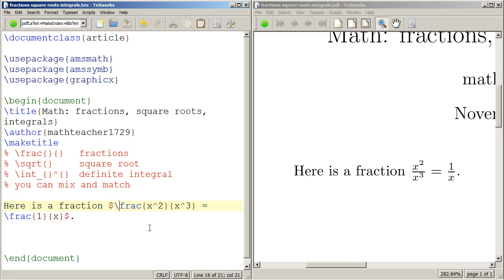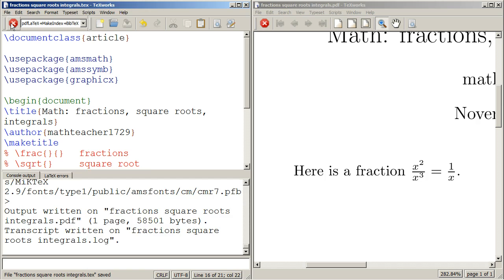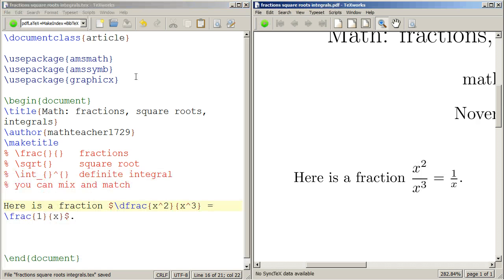Now, suppose you want your fractions to appear a little bit larger, right? Just put dfrac instead of frac. That's for display mode fractions. And can you see the difference there? I just did dfrac for x squared over x to the third, and it appears a little bit bigger than 1 over x.